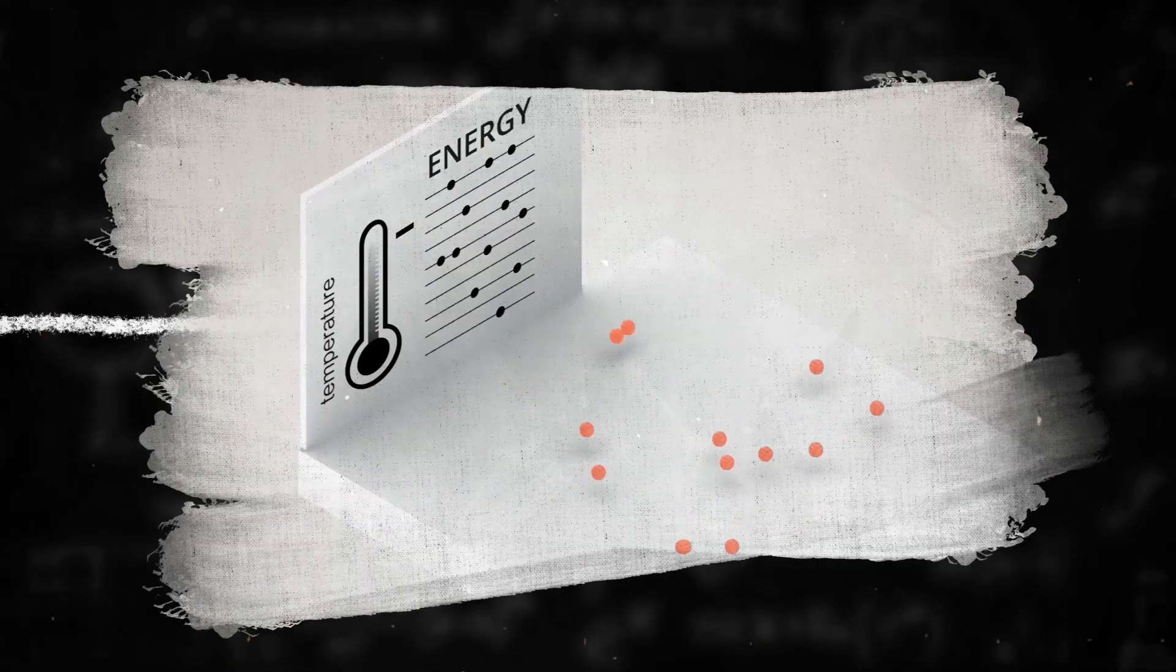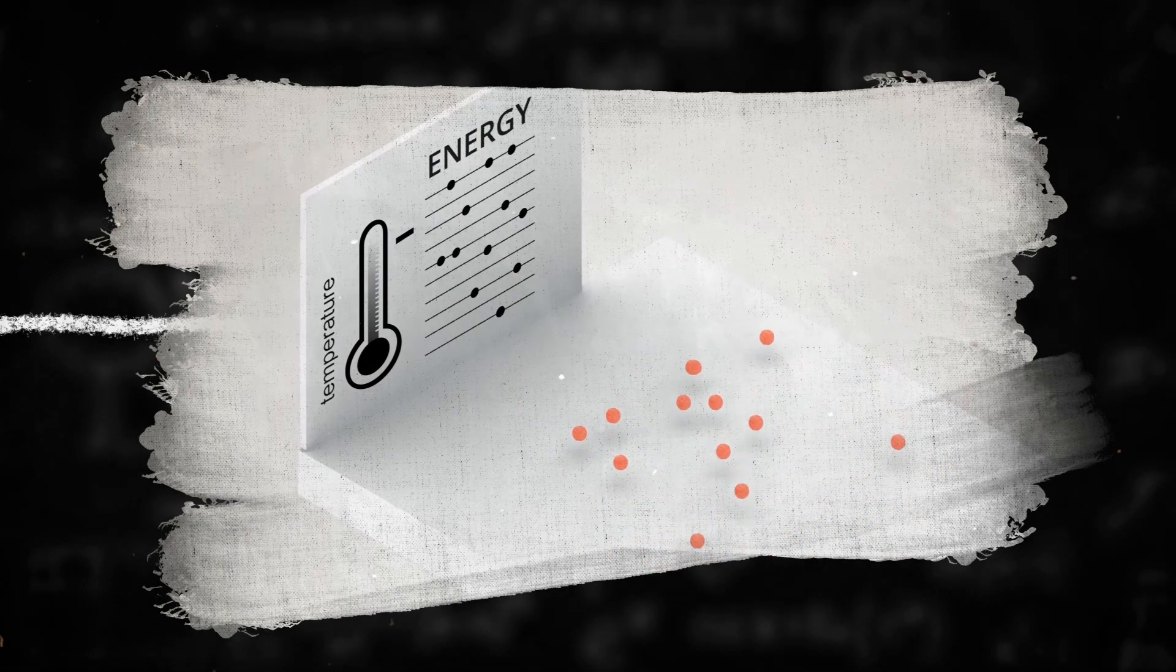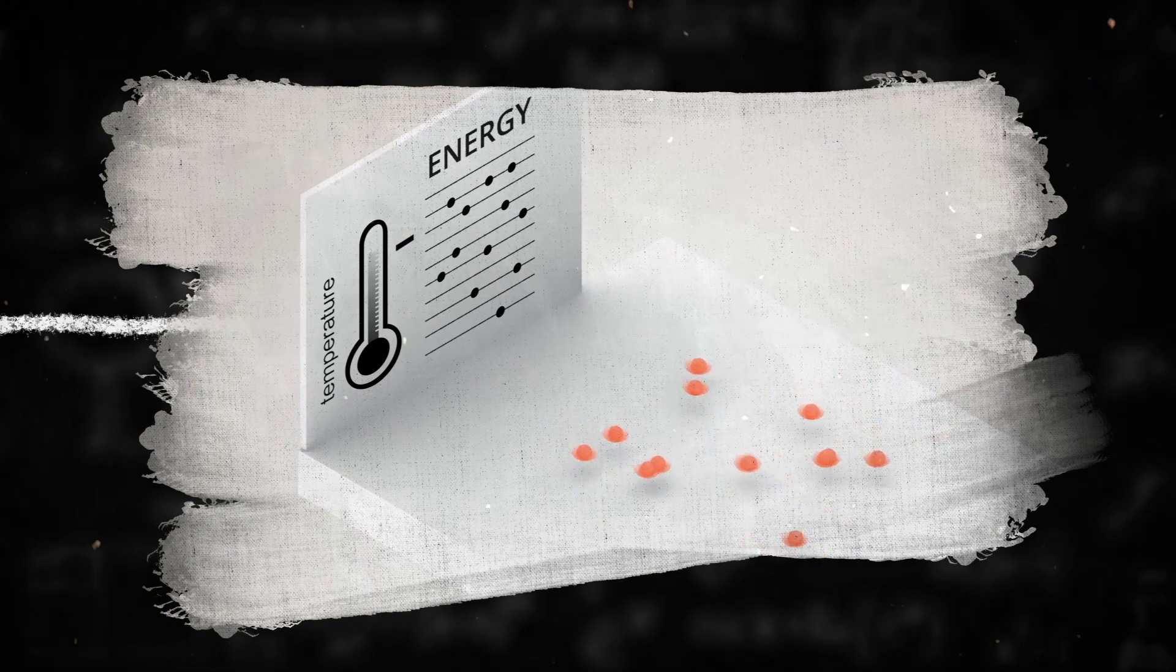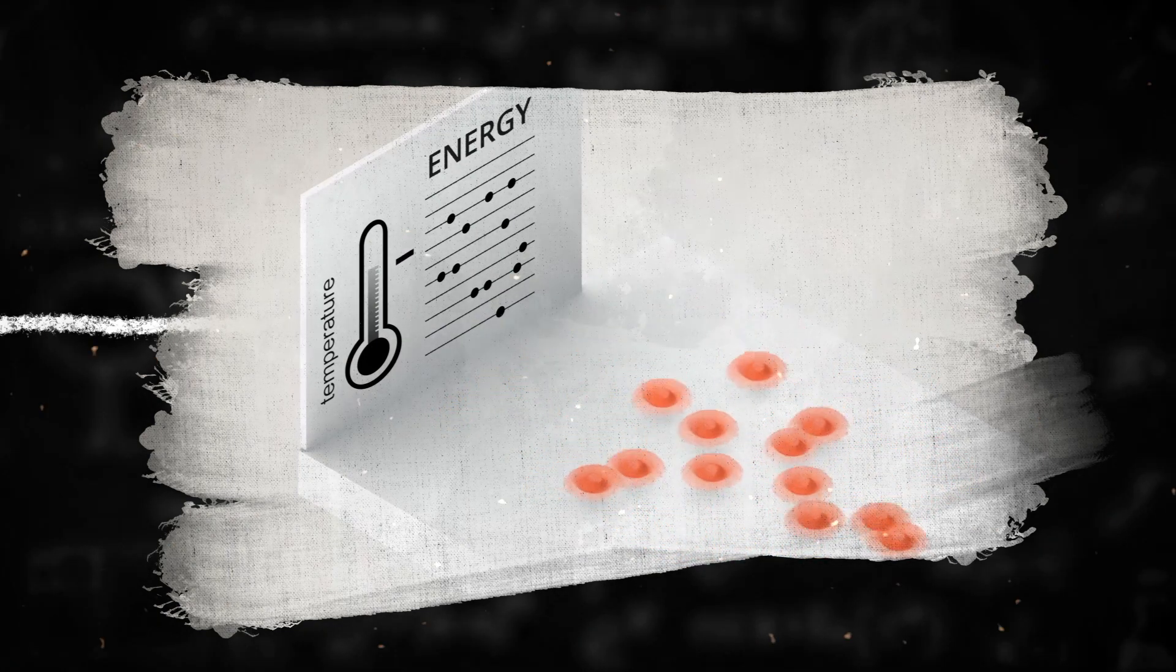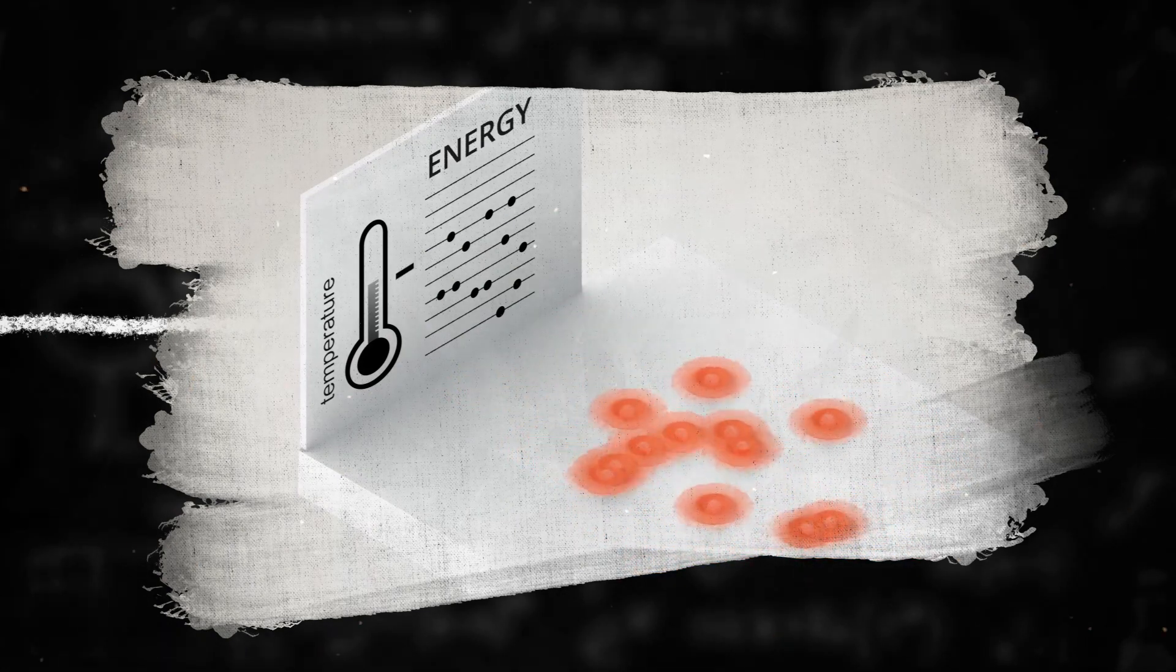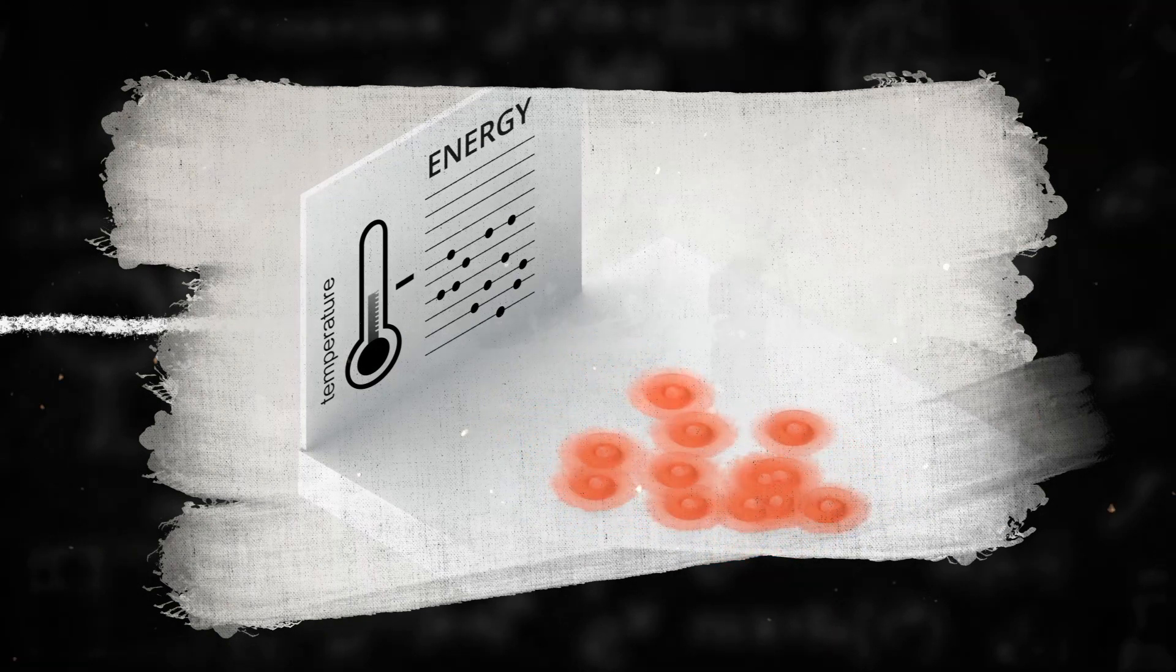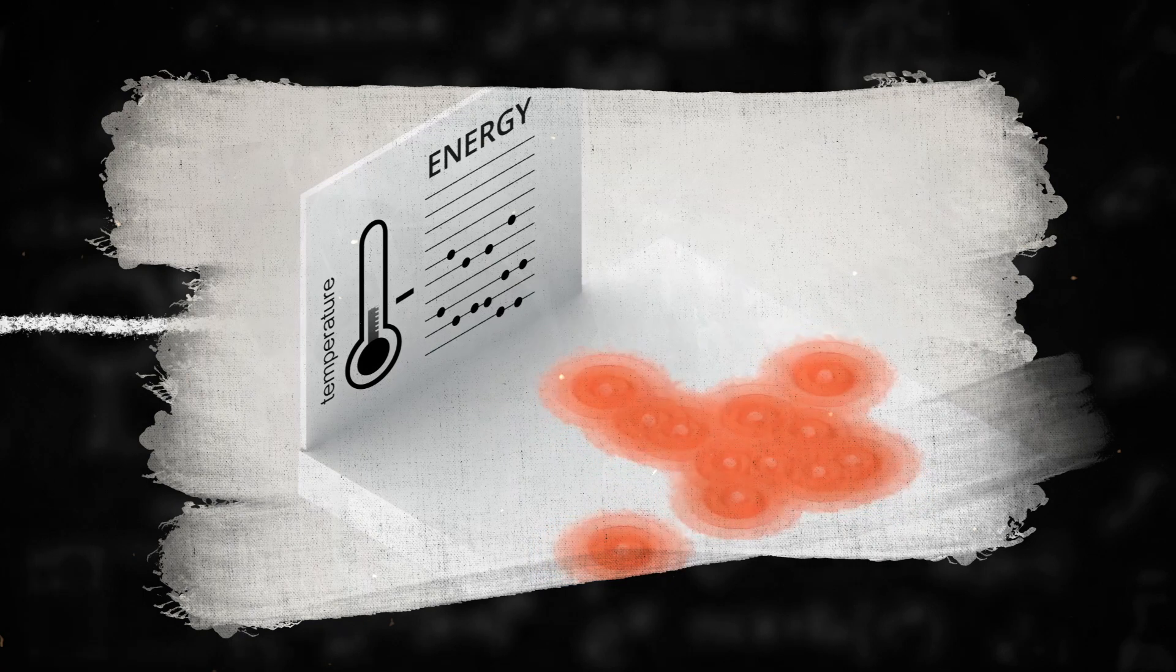A Bose-Einstein condensate is formed when low density bosonic gas is cooled to temperatures near absolute zero. In 1924 Bose derived the black body photon spectrum using statistics and collaborated with Einstein, who extended the concept to non-interacting atoms, giving rise to Bose-Einstein statistics.